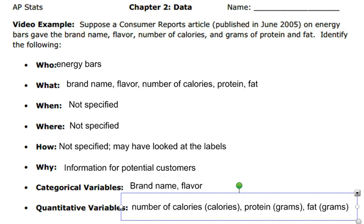So this was your video example for chapter two — just giving who, what, when, where, how, why, and then the categorical and the quantitative variables. And that's why we do both.